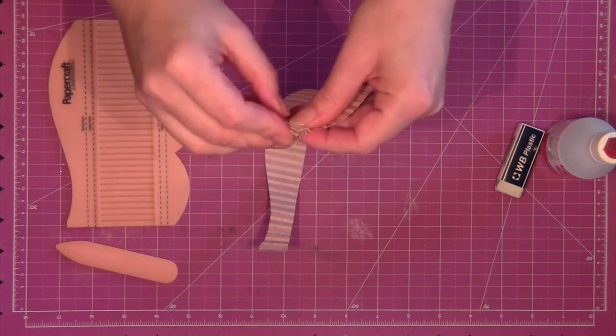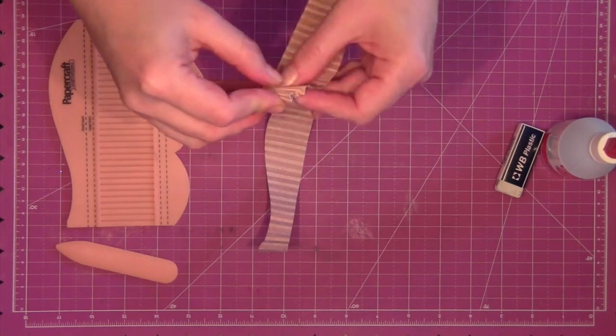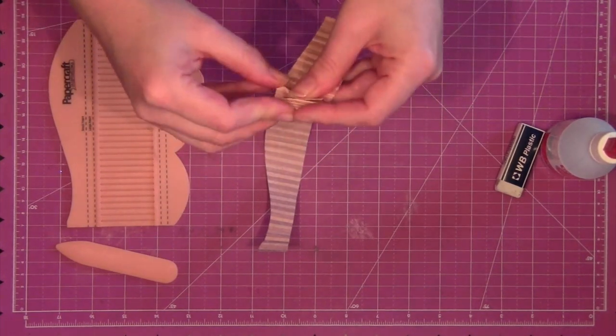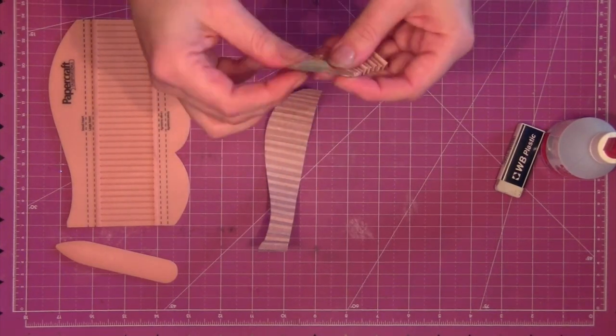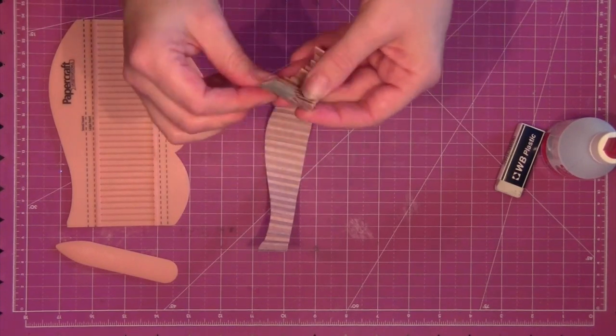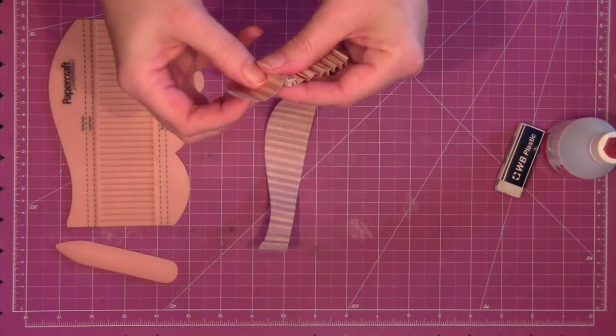Now we're going to mountain and valley fold each of our scored strips. Work your way along the strip and at each score line fold up and then down and then up and then down to create your mountain and valley folded strip.